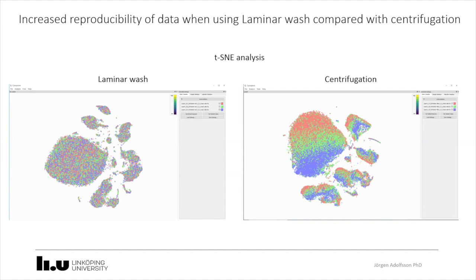Next question: Have you performed any intracellular staining with laminar wash? Yes, I have worked a lot to get this to work. The common approach using methanol for intracellular staining is complicated because cells start to float, and you need cells to go to the bottom and stay there. Methanol-based intracellular kits just don't work. Recently, a non-methanol-based kit from eBioscience for permeabilizing cells has been found to work.